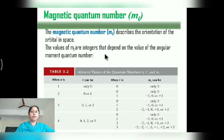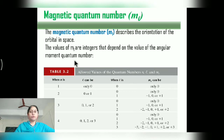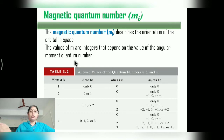The values of ml are integers that depend on the values of the angular momentum quantum number, or orbital quantum number. N starts from 1; L depends on N; and ml depends on L. So these quantum numbers are dependent on each other.